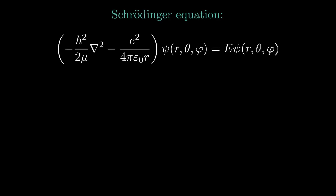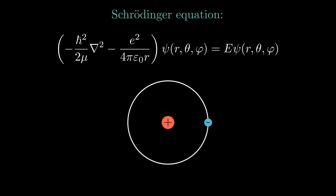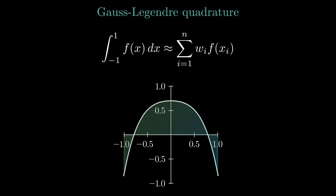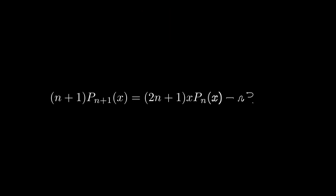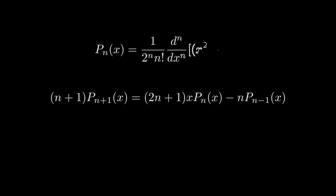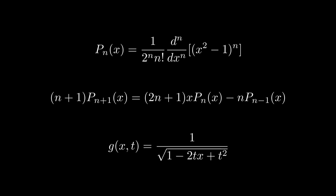When solving the Schrödinger equation for a hydrogen atom, a special set of polynomials called Legendre polynomials pop up. These polynomials are also useful in numerics when approximating integrals. But there are also many other interesting properties, such as recursive formulas, explicit formulas, and an expression for the generating function. In this video, we will derive the most important properties of the Legendre polynomials.